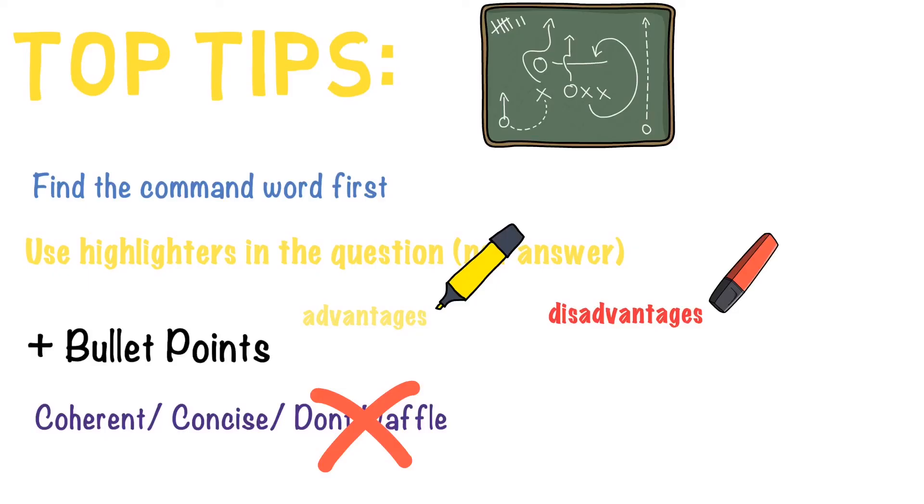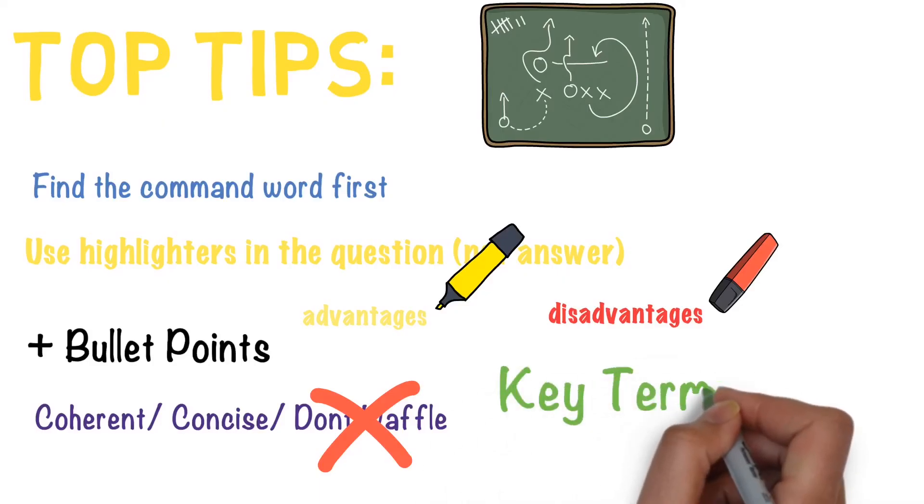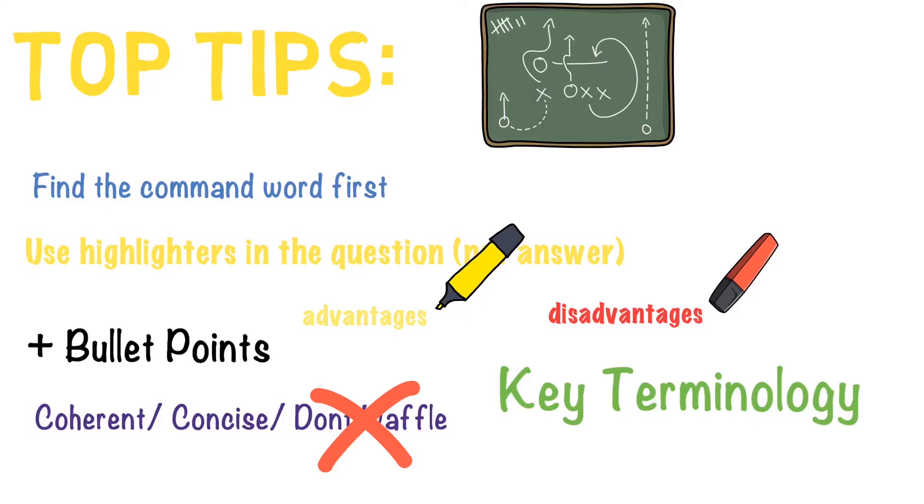Another top tip is make sure you use the key terminology. Very often when people are describing an experiment they use words like amount rather than volume or mass. Use the right scientific words and you will get the marks. Also spelling, punctuation, and grammar are key. If you're starting sentences with lowercase letters and not using full stops, you're not going to get the marks for writing a coherent answer. So make sure your spelling, punctuation, and grammar are as good as you can possibly get them.